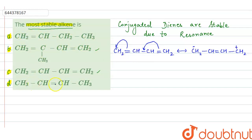So we can say that the alkenes given in option A and option D will be less stable than B and C, because B and C are both conjugated dienes. Options A and D are wrong — they will be less stable. Now we will compare B and C.